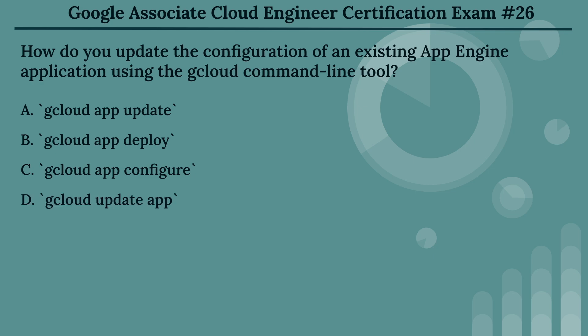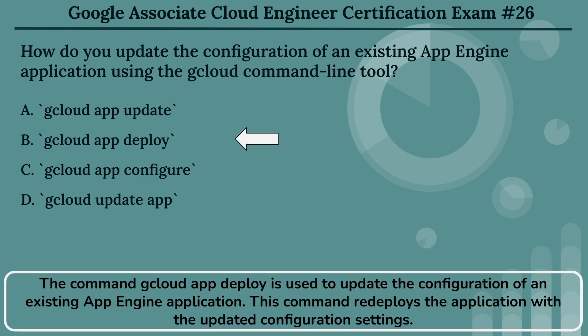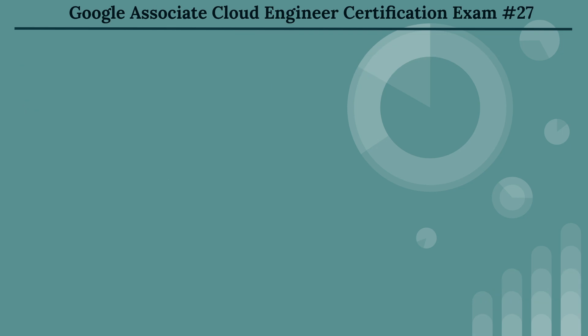The right answer is Option B: gcloud app deploy. The command gcloud app deploy is used to update the configuration of an existing App Engine application. This command redeploys the application with the updated configuration settings.